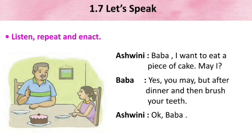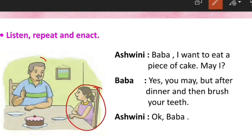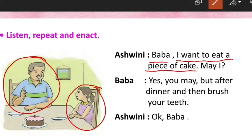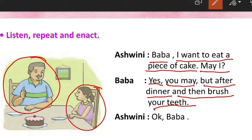Now look at the next conversation. This conversation is between Ashwini and her father. Ashwini says: 'Baba, I want to eat a piece of cake. May I?' Her father says: 'Yes, you may, but after dinner, and then brush your teeth.' Ashwini says: 'Okay, Baba.' In this conversation Ashwini asks her father permission to eat a piece of cake, and her father says she may, but only after dinner and after brushing her teeth.